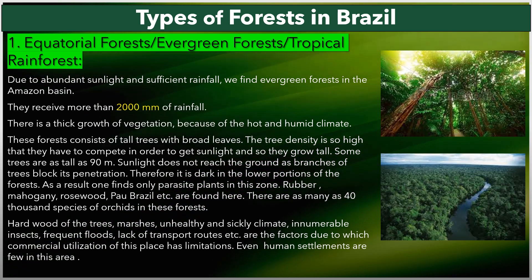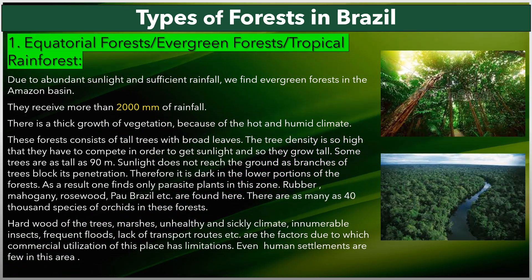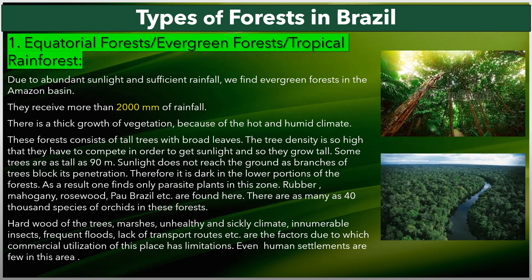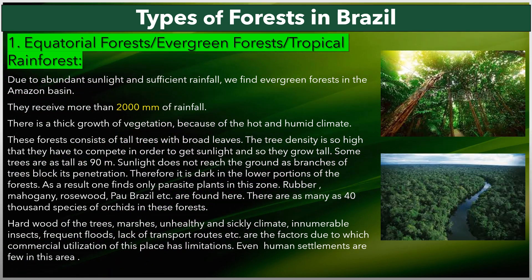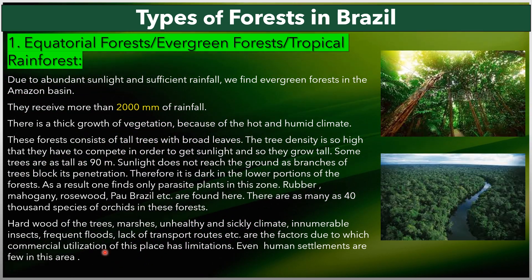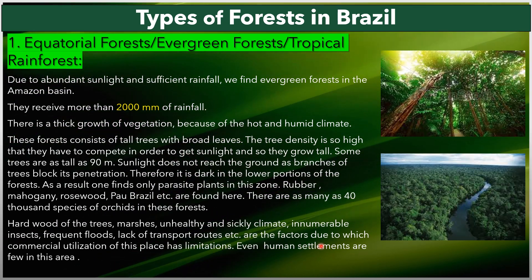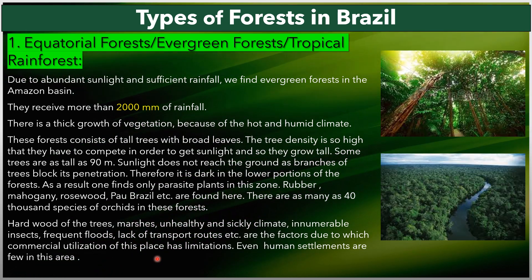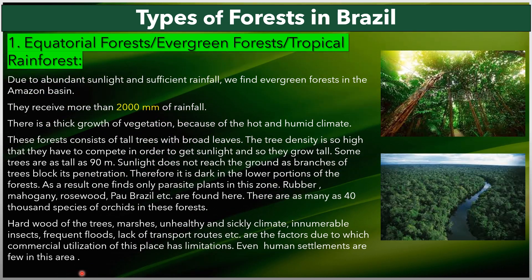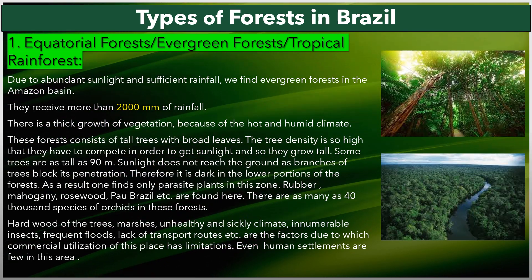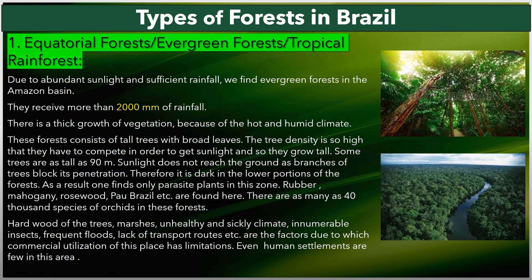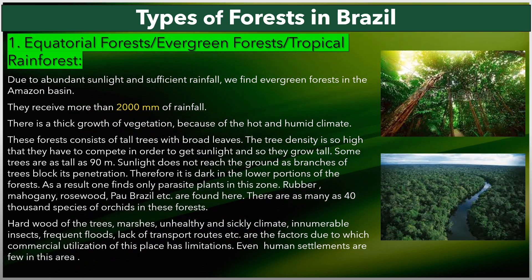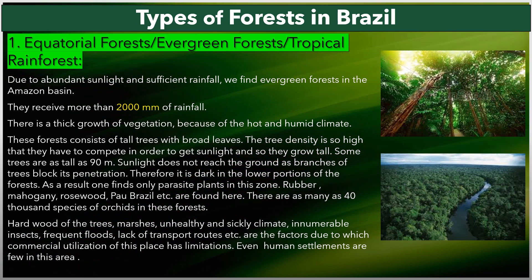Hardwood of the trees, marshes, unhealthy climate, innumerable insects, frequent floods, and lack of transport routes are factors that limit the commercial utilization of this area. Even human settlements are few here. This can serve as a give-reason answer: why human settlements in the Amazon Basin are less.